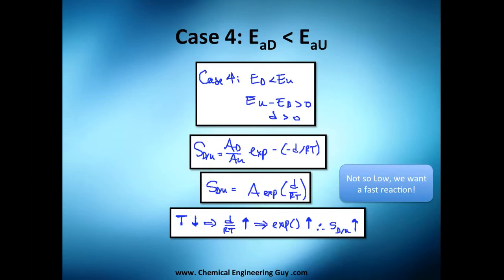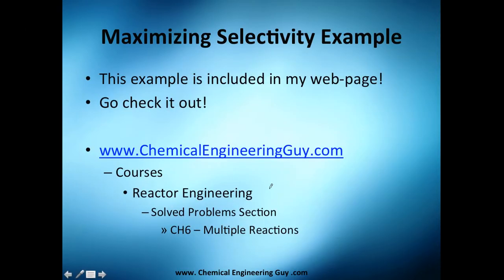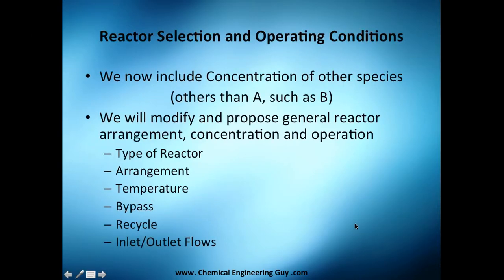Let's check out this example. It's about maximizing the selectivity. We're not going to include it, but you've seen so far enough information to solve it by your own. Just read it. If you want to check it out, go to my web page, click it, then go to courses, go to reactor engineering, check the solved problem section, then go to chapter six which is multiple reactions. You will find not only this problem but a lot of problems, exercises, examples, etc. It's time to change topic. Now we're going to see reactor selection.